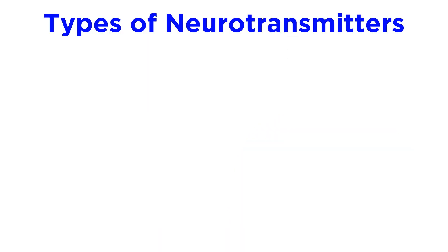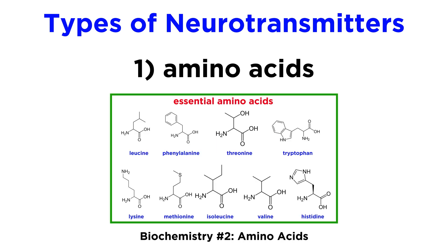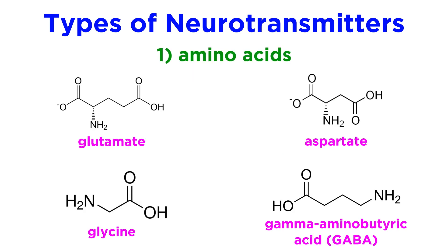While there are a great variety of compounds that qualify as neurotransmitters, let's start with the most common ones, which are small molecules of three classes. These are amino acids, monoamines, and acetylcholine. The amino acids of interest here are glutamate, aspartate, glycine, and gamma-aminobutyric acid, or GABA for short, which is derived from glutamate.